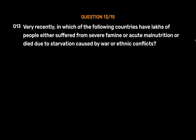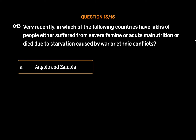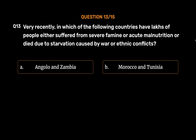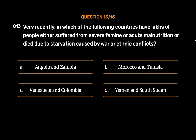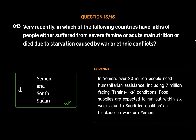Question No. 13. Very recently, in which of the following countries have lakhs of people either suffered from severe famine or acute malnutrition or died due to starvation caused by war or ethnic conflicts? The correct answer is Option D: Yemen and South Sudan. In Yemen, over 20 million people need humanitarian assistance, including 7 million facing famine-like conditions. Food supplies were expected to run out within six weeks due to the Saudi-led coalition's blockade on Yemen.